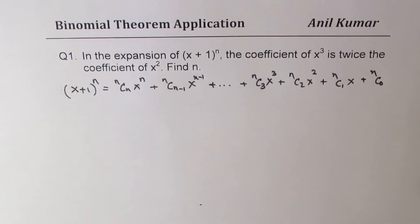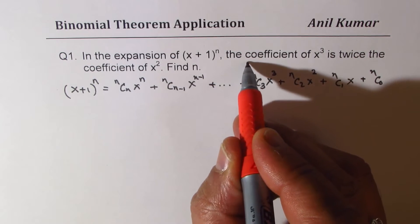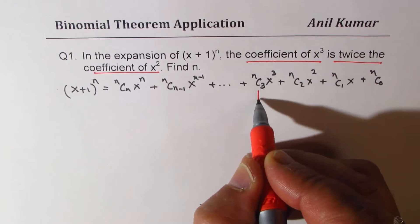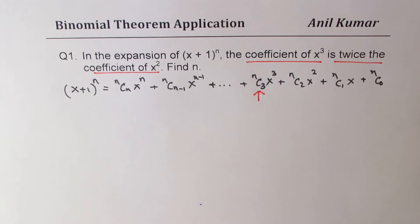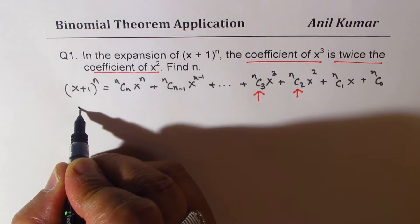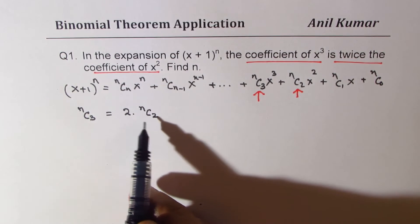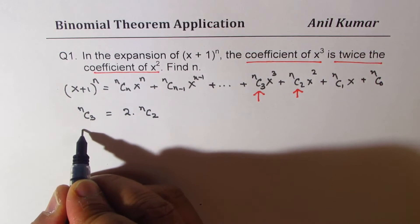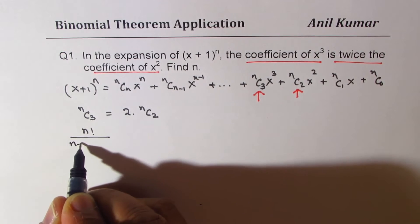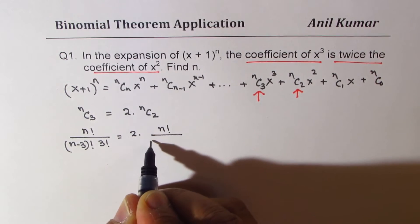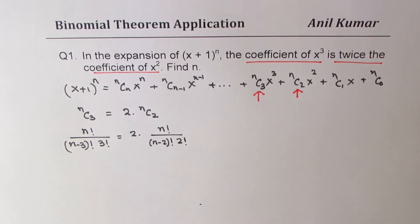The condition given is that the coefficient of x³ is twice the coefficient of x². The coefficient of x³ is nC3, and that equals twice nC2. So we equate: nC3 = 2 × nC2. That is, n! / [(n−3)! × 3!] = 2 × n! / [(n−2)! × 2!].